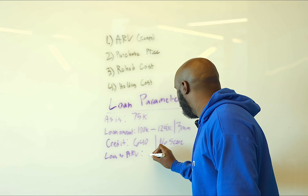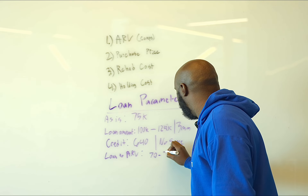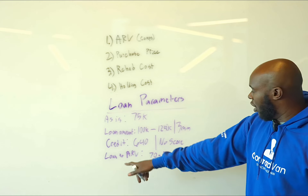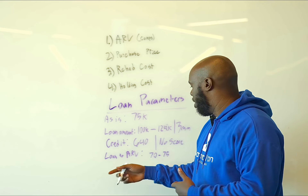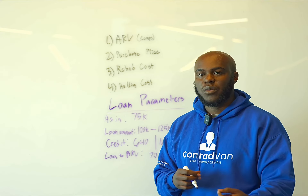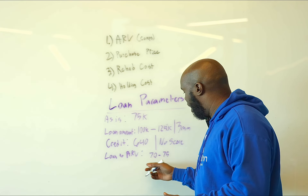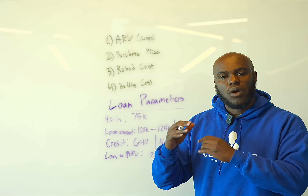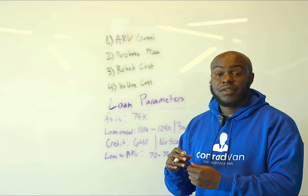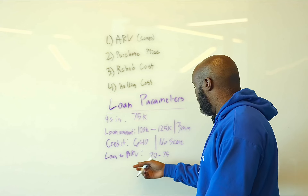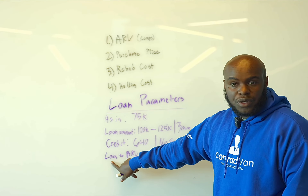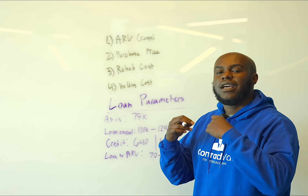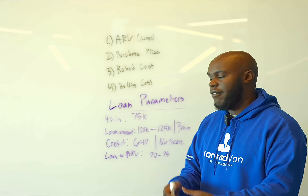Loan to ARV is going to be about 70 to 75%. Your loan is how much you're borrowing; your ARV is how much the property is worth. Most lenders will only allow you to go up to 70 or 75% of that ARV, because they want to make sure you have room to make profits — they want to get paid. So your loan amount, how much you can borrow, will typically be no more than about 70 to 75% of your after repair value.